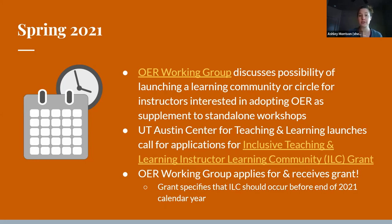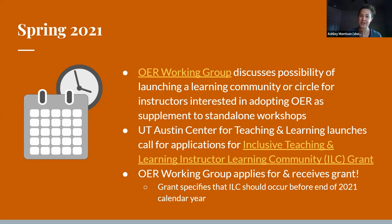The grant provided us with $2,500 to spend on whatever we might need to support the instructor learning community, which we'll refer to as the ILC throughout this presentation. We planned from the outset to allocate almost all of those funds for participant stipends to be awarded upon completion of requirements. We thought it was important to recognize the time and effort that participants would put into making the most of the experience. The grant terms also specified that we'd need to deliver the ILC before the end of 2021, which was a much tighter timeline than we'd anticipated. We thought we'd have almost a year to get ready — instead, we had the summer to prepare.